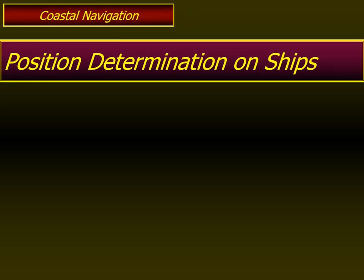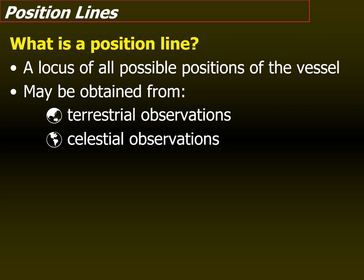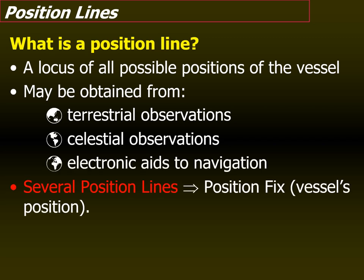In the topic of coastal navigation today, let's talk about position determination on ships. We'll primarily focus on the use of position lines and position circles to plot the position of the ship at sea. The position line is a locus of all possible positions of the vessel, and position lines can be derived from terrestrial observations, celestial observations, or electronic aids to navigation. In this presentation, we'll examine how position lines are obtained from terrestrial observations.